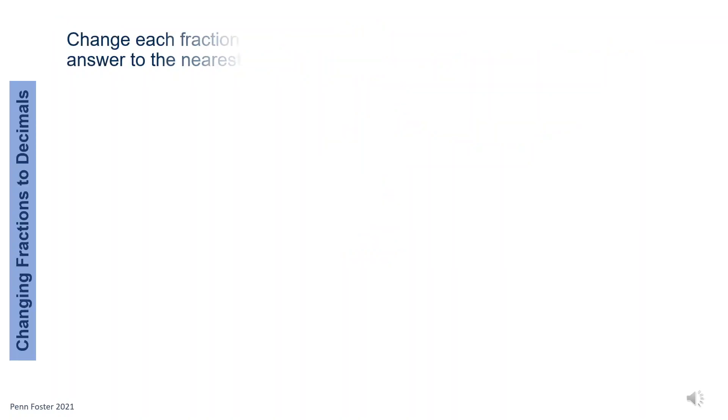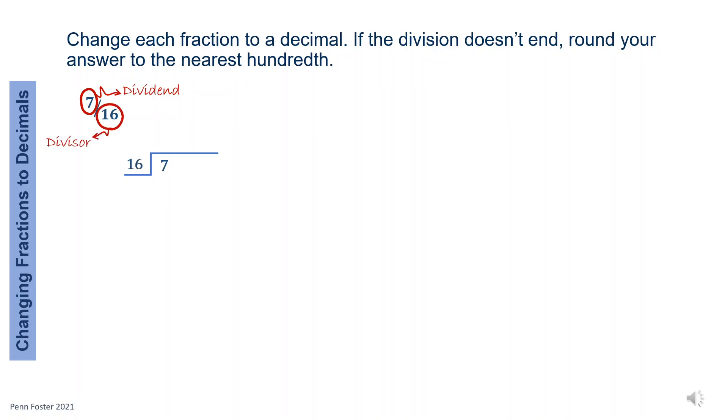Long division is used to convert fractions to its decimal form. These steps are the same. Divide, multiply, subtract, bring down, and repeat. Let's begin with 7 over 16. The first step is to set up the long division correctly. The numerator is the dividend. Place it under the sign. The denominator is the divisor. Write it outside the sign.